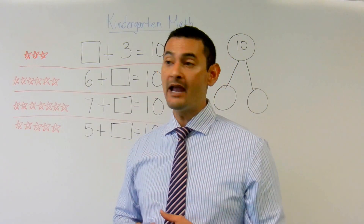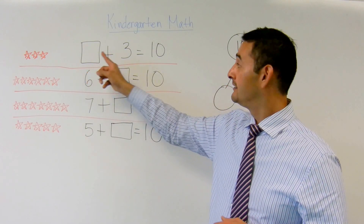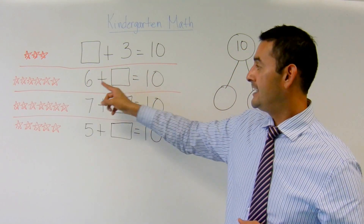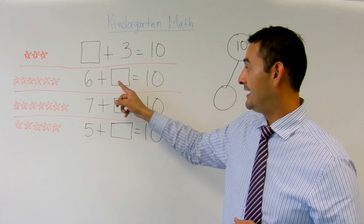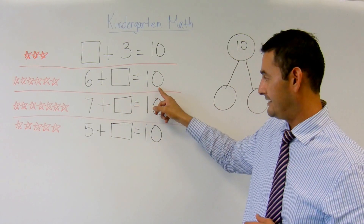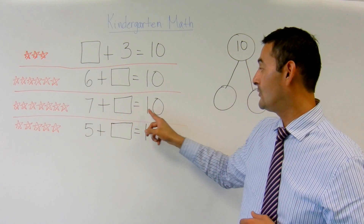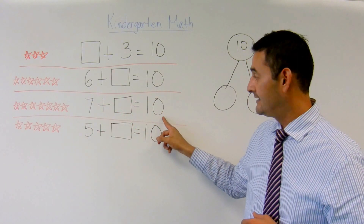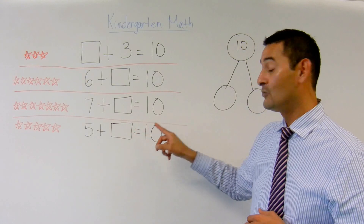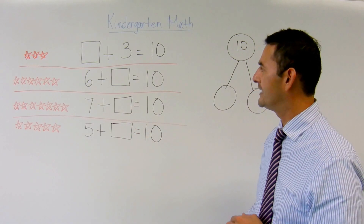And here I have some examples. I've got something plus 3 equals 10. Here I've got 6 plus something equals 10. Here I've got 7 plus something equals 10. And here I've got 5 plus something equals 10. So I'm going to show you several ways that you can do this.